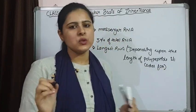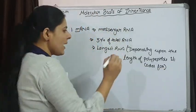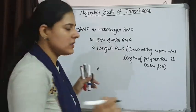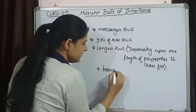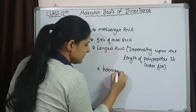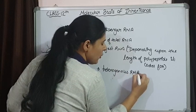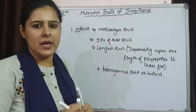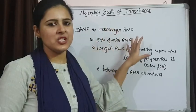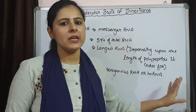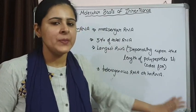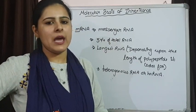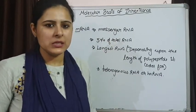Because of the difference in length that is found, mRNA is also known as heterogeneous RNA, or in short HnRNA. So mRNA is known as messenger RNA or heterogeneous RNA or HnRNA. The function is to carry information from DNA to the ribosomes for the process of protein synthesis.